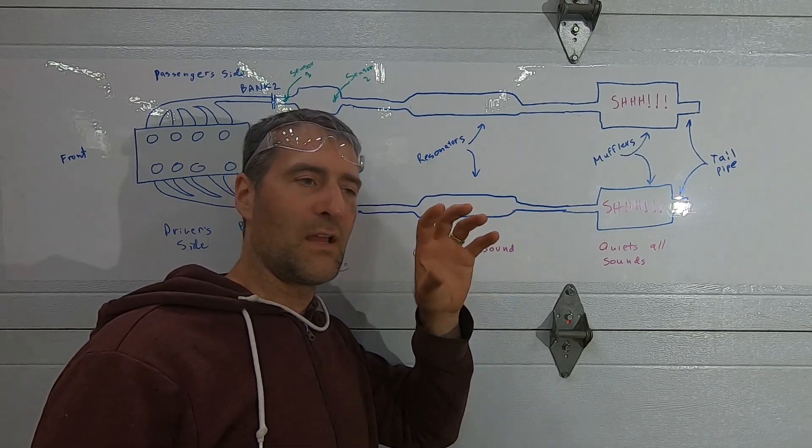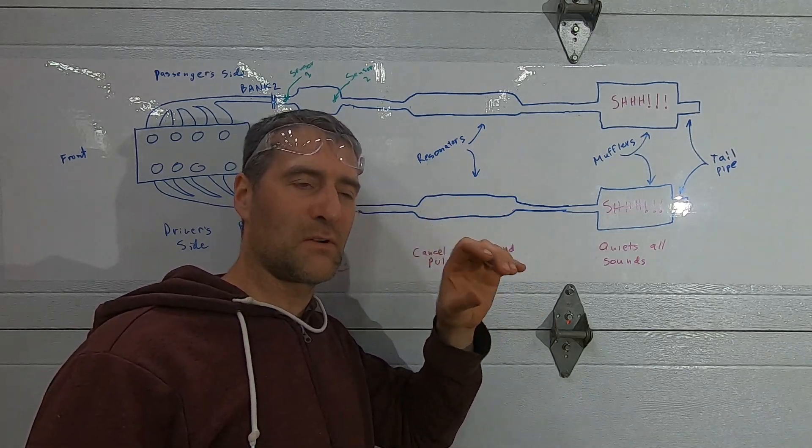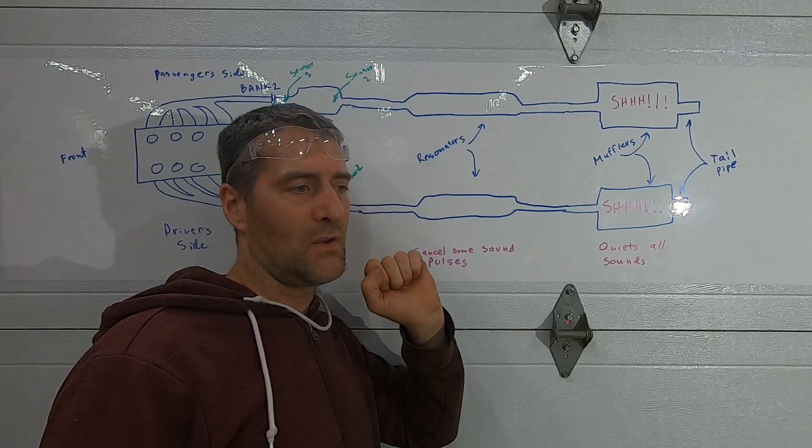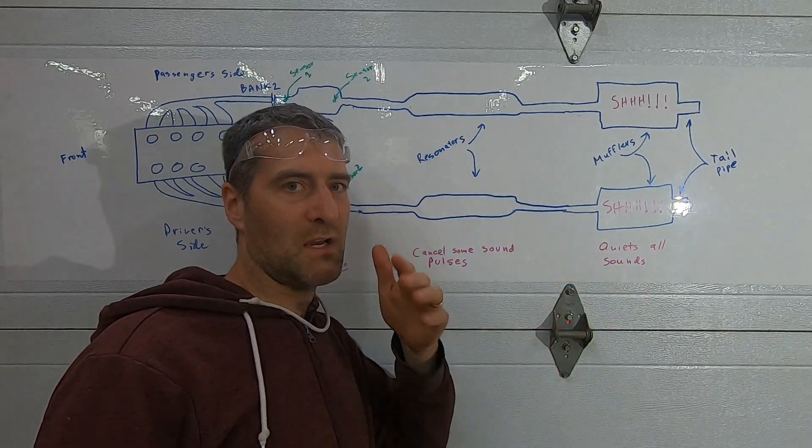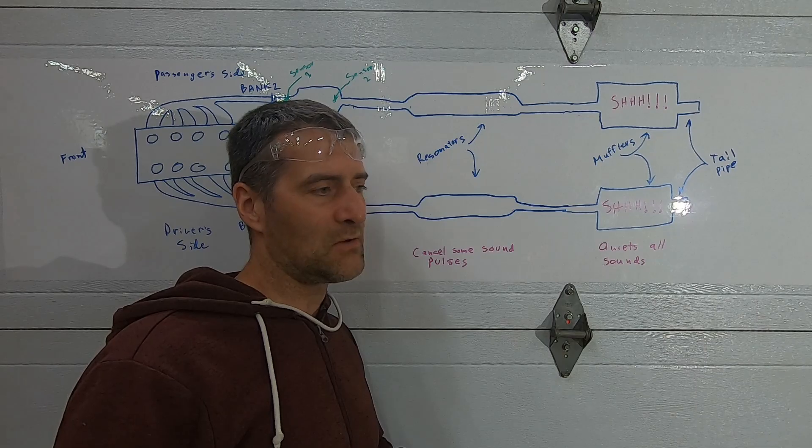And the other thing to keep in mind is either end of the cat could look good and not melted, but it's hottest in the center of the catalytic converter. So you may have melted or collapsed internals and not really be able to see it from the outside. Just keep in mind that that could be the case.